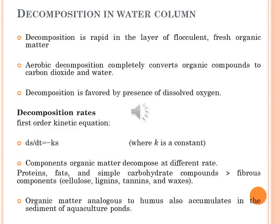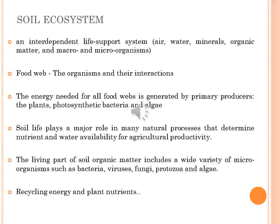In terrestrial soil, organic matter analogous to humus also accumulates in the sediment of aquaculture ponds. These materials decompose very slowly compared to fresh organic matter deposited during aquaculture crop cycles. The soil ecosystem can be defined as an interdependent life-support system composed of air, water, minerals, organic matter, and macro- and micro-organisms, all of which function together. The organisms and their interactions enhance many soil ecosystem functions and make up the soil food web.